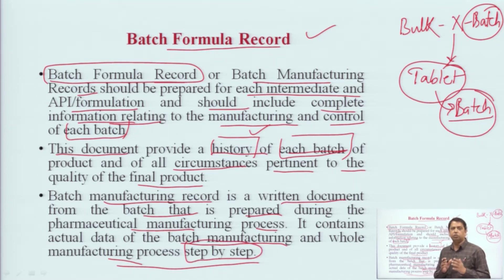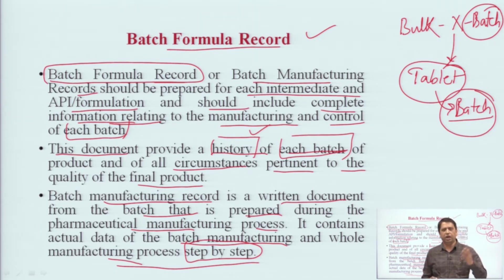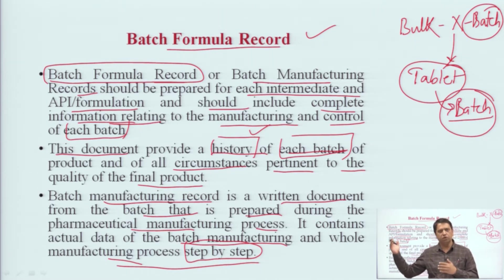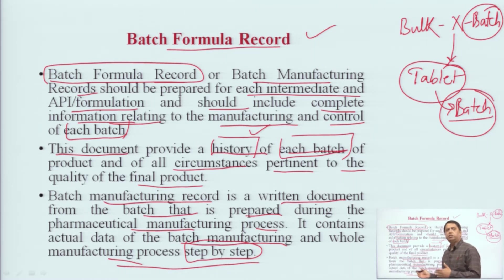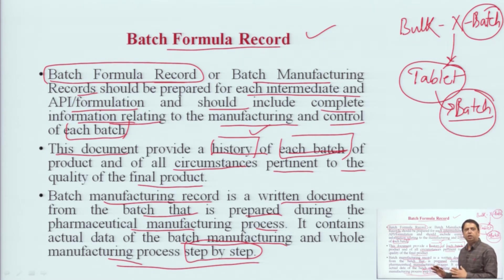All the steps used in the manufacturing process are recorded here step by step. For example, for a tablet, it starts with mixing, then granulation, then drying of granules, then compression, and finally the tablet. All the steps of that particular formulation — there could be fewer or more steps — but the complete details of all those steps will be present here.